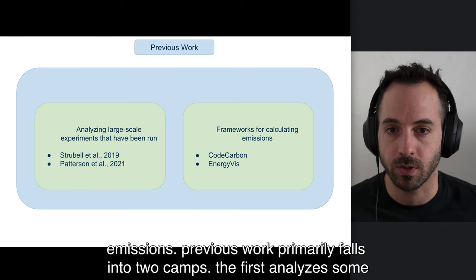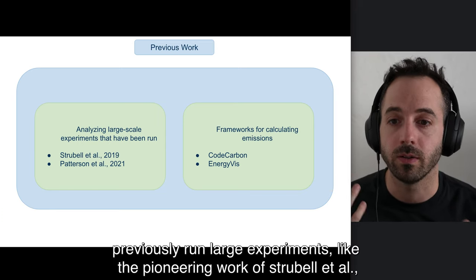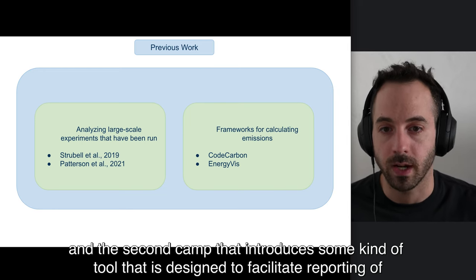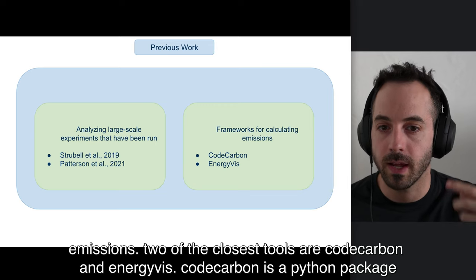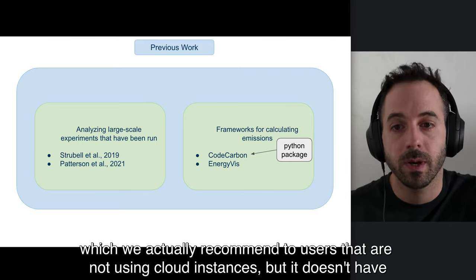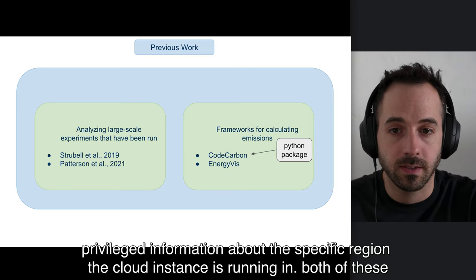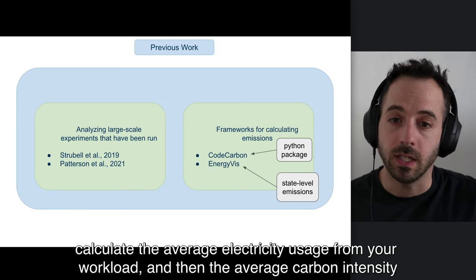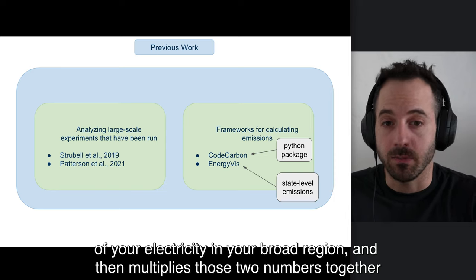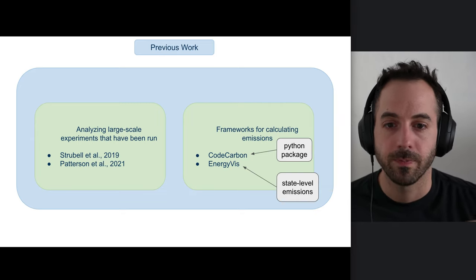We aren't the first to measure emissions. Previous work primarily falls into two camps. The first analyzes some previously run large experiments, like the pioneering work of Strubell et al., and the second camp introduces some kind of tool that is designed to facilitate reporting of emissions. Two of the closest tools are Code Carbon and EnergyViz. Code Carbon is a Python package, which we actually recommend to users that are not using cloud instances, but it doesn't have privileged information about the specific region that the cloud instance is running in. Both of these calculate the average electricity usage from your AI workload, and then the average carbon intensity of the electricity in your broad region, and then multiply those two numbers together to give you your estimate. But this doesn't capture the change over time in both of those.